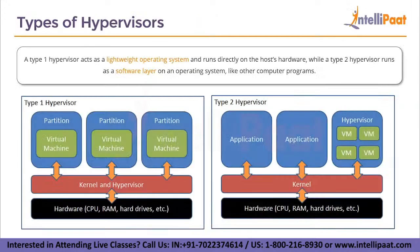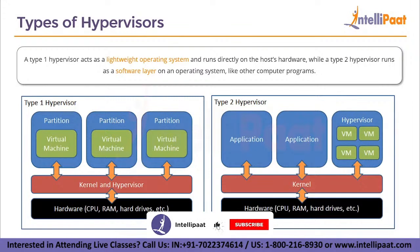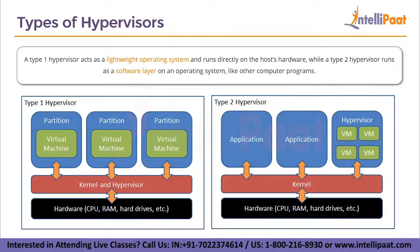There are two main types of hypervisors: Type 1 (bare metal) and Type 2 (hosted). A Type 1 hypervisor acts as a lightweight operating system and runs directly on the host's hardware. A Type 2 hypervisor runs as a software layer on top of an existing operating system, like other computer programs. With Type 2, your host operating system sits at the kernel level, and the hypervisor runs as an application on top of it, within which you can create as many virtual machines as you like.